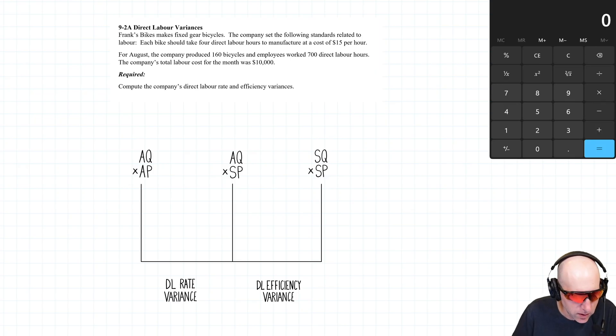The company set the following standards related to labor: each bike should take four direct labor hours to manufacture at a cost of $15 an hour, so 4 × 15 = $60 in labor cost per bike. For August, the company produced 160 bicycles and employees worked 700 direct labor hours. The company's total labor cost for the month was $10,000.